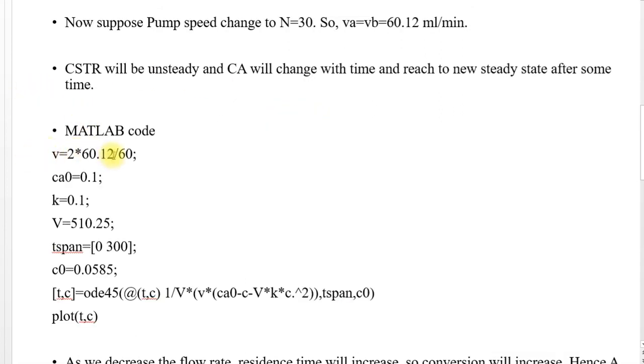Now this is the new feed flow rate, V equals 2 times 60. At this flow and this pump speed, we divide by 60 just to make sure that we are working with time in seconds. CA0 is 0.1 fixed, rate constant value is fixed. Volume of the reactor, you got it in lab.